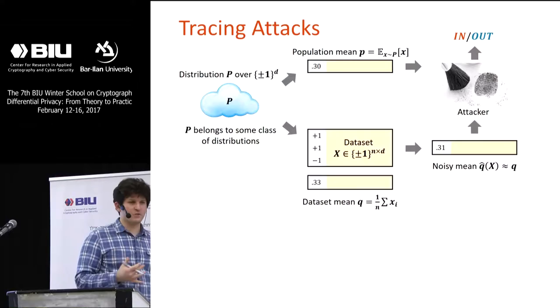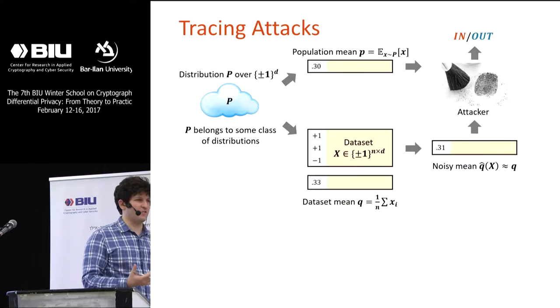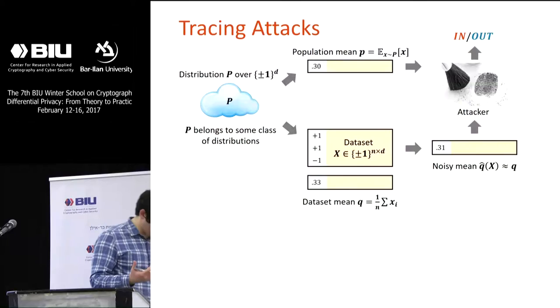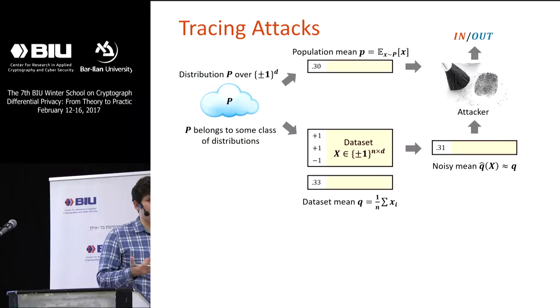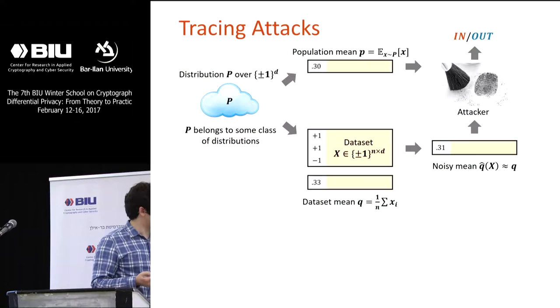To prove these things work, we have to model where the data came from. As in Vitaly's talk, the dataset comes from some distribution, and we need to understand what that distribution looks like. In empirical work you don't have to explicitly model it, but here we do — otherwise it's not meaningful to infer membership in versus out of the dataset. There will be a distribution P over rows of the dataset.